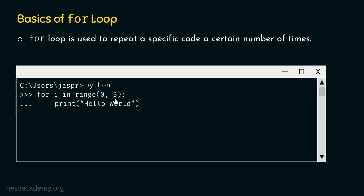Eventually, those values will be received by variable i, one at a time. So the first time, i will receive value zero. After receiving that value, we go inside the for loop and the statement hello world will be printed — the print function will be evaluated. Then we get back and i will now receive the next value, which is one. After receiving that value, we again go inside and print hello world.